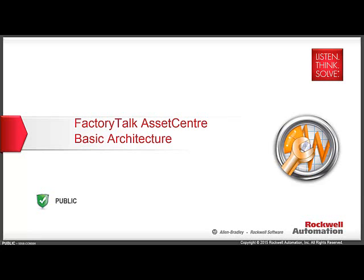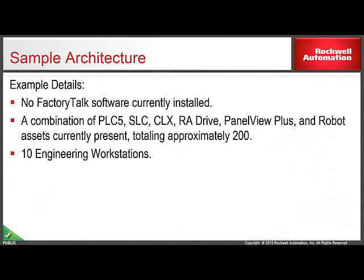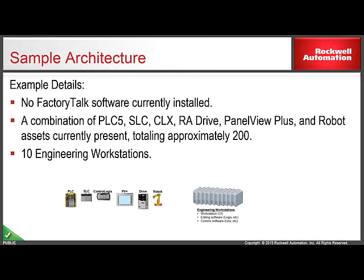The purpose of this presentation is to provide a basic walkthrough of the architecture requirements for FactoryTalk Asset Center. The example architecture we'll be building is based on an existing plant which currently has no distributed FactoryTalk software installed. There are a total of about 200 automation assets in the facility, including a combination of PLCs, SLCs, and ControlLogix processors, some PanelView Plus and Drive assets, and some robots accessible via FTP. The facility is using 10 engineering workstations to administer the system, with a network infrastructure already in place.